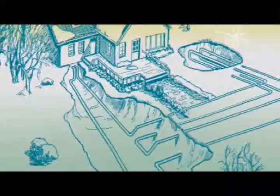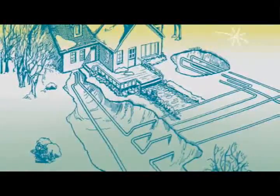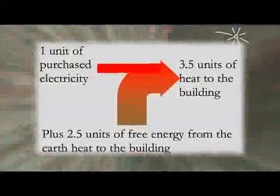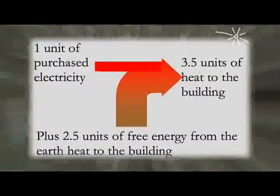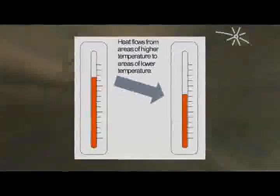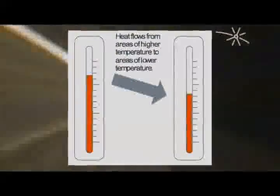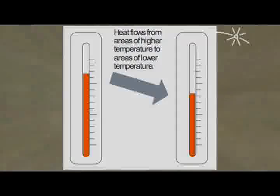So in the summertime we're putting heat into the ground and in the winter time we're doing the opposite. We're taking advantage of the fact that it might be minus 30 degrees outside, but it's still 6 degrees above freezing under the ground.